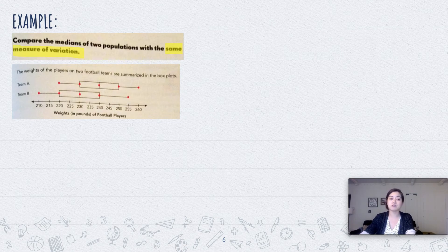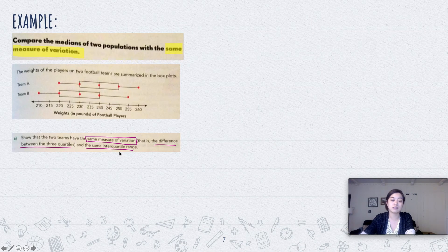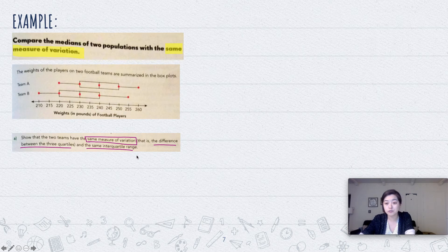I have samples of my population for Team A and a sample for Team B. Part A says to show that the two teams have the same measure of variation — that is, the difference between the three quartiles and the same interquartile range. The three quartiles are within the box: Q1, Q2 (the median), and Q3, along with the lower and upper extremes.